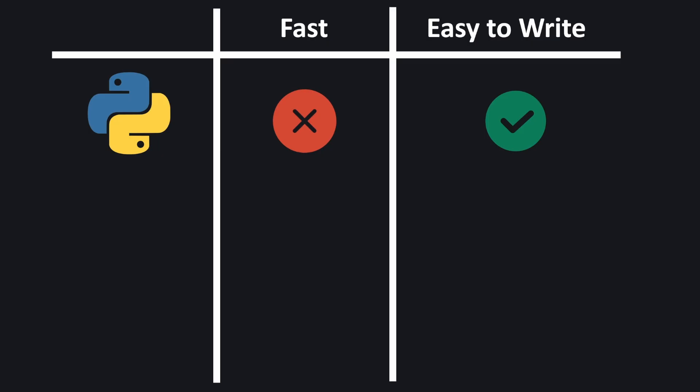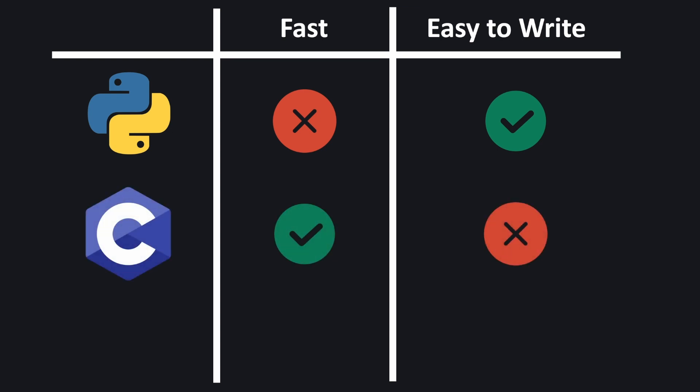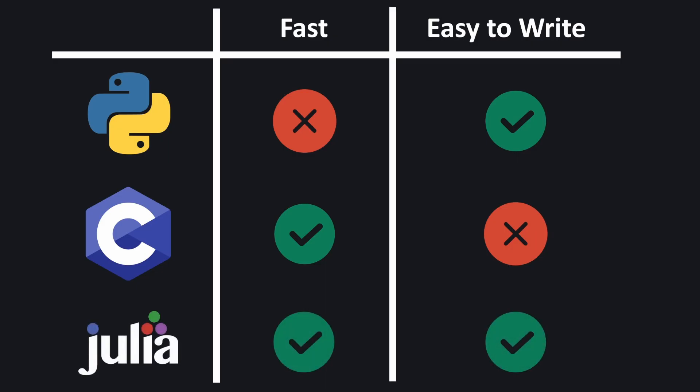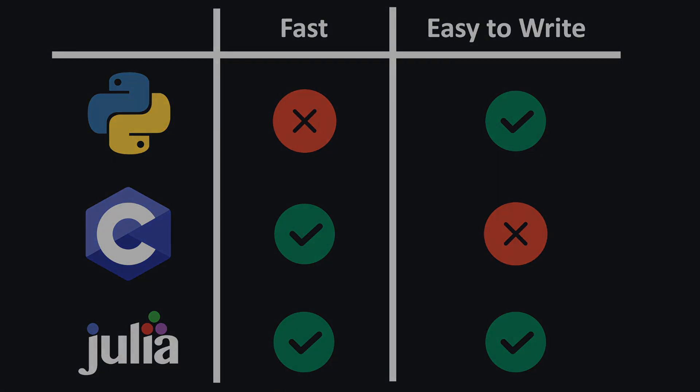If you look at the languages those packages are often written in — for example C — you can see it has the opposite problem. Code written in C is usually much faster than equivalent code written directly in Python, however this code is not easy to write, and anyone who's learnt C will probably tell you that it's much easier to write in Python. Now this is where Julia comes along. Julia tries to get the best of both worlds: it's quite simple, quite easy to write, it looks a lot like Python, but when it comes down to it, it can run at speeds approaching that of C. And usually it's much easier to achieve very high performance in Julia than it is in C — something we'll explore throughout this course.